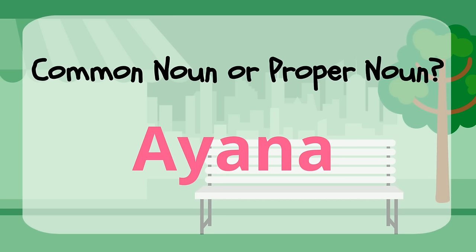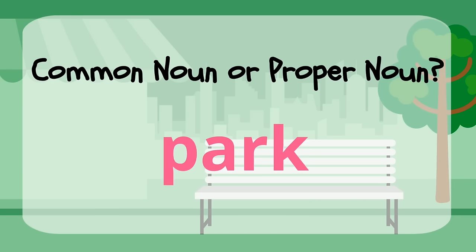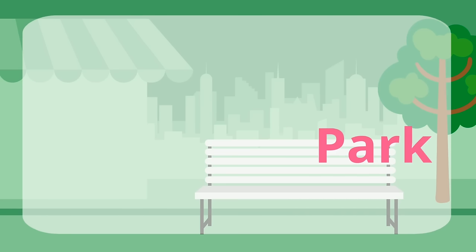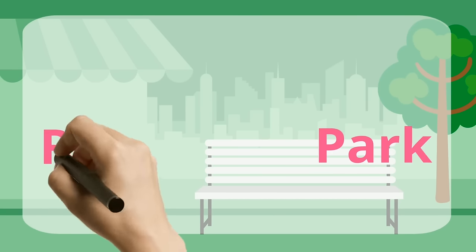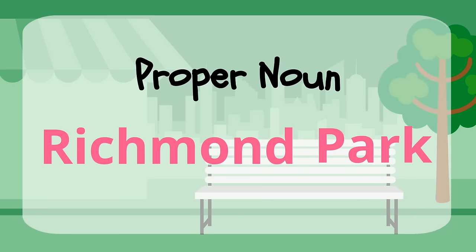Can you tell if this word is a common noun or proper noun? Ayana — Ayana is a special name of a girl, so it's a proper noun. How about a park? A park is a place, so it's a common noun. But if we give it a special name — say Richmond Park — it's now a proper noun. And because it's a proper noun, we should capitalize the first letter of each word.